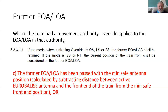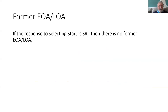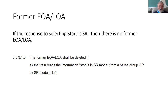This does cause a slight problem, as we'll see on a later slide. Just to be clear, the end of authority or limit of authority may not be known, in which case clause C wouldn't apply. That could be because we've responded to an offer of SR when the driver has selected start — in that case there is no former end of authority or limit of authority. The train is in SR when the override is activated. So there is not an end of authority or LOA created at the front of the train, and sometimes that end of authority or LOA can also be deleted as described in one of the clauses.